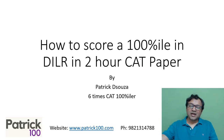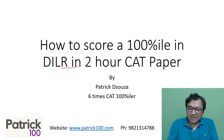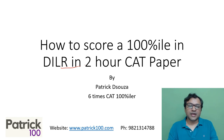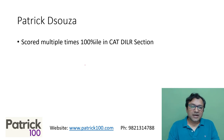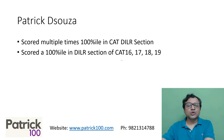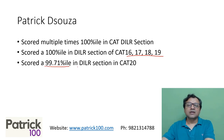Hi, my name is Patrick. This video is about how to score a 100 percentile in the DILR section. I'll be speaking from my own experience and telling you what you need to do to score a 100 percentile. I scored a 100 percentile in DILR multiple times, which includes the CAT 16, 17, 18, and 19 papers. CAT 20, I made some mistakes and scored a 99.71 percentile in the DILR section.